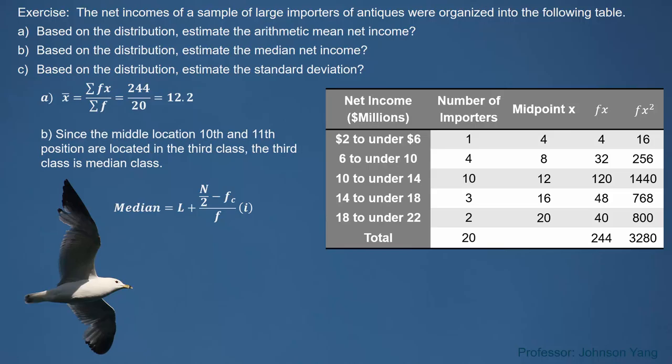Then we try to recognize the median class. Total frequency is 20, meaning we have 20 data points, so the middle location is 10.5. We check which class contains the 10.5th position. The first class has one data point, the second has four — together five. We're not at 10.5 yet. For the first three classes together, we have 15 data. So the 10.5th position is in the third class, from 10 to under 14. We recognize the third class as the median class, and using the formula we get a median of 12.